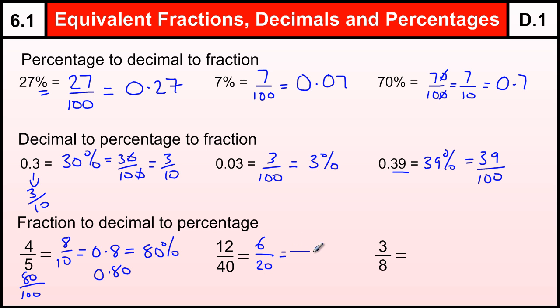6 over 20, I can then change to out of 100, by times them by 5, to get 30 out of 100, which is 0.3 and 30%.